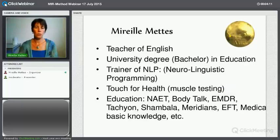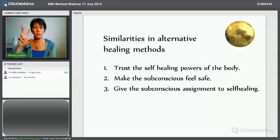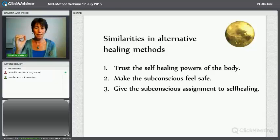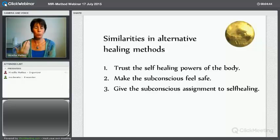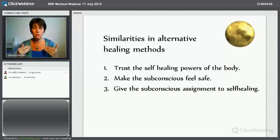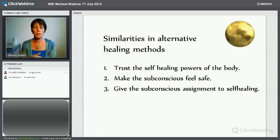I studied over 40 different natural health methods to find out if there are many more ways to heal people. I discovered three similarities. First, all these alternative healing methods have in common that they trust the self-healing powers of the body — they all know that the body heals itself. The second is that our body will only heal if the subconscious feels safe. And the third is that we need to tell the subconscious how to heal.